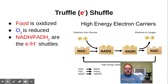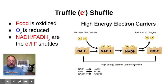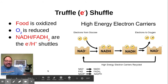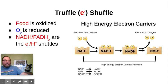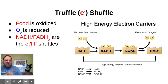Key molecules in this process include NADH and FADH2. NADH — nicotinamide adenine dinucleotide — is basically a modified adenine. Think of how you take simple molecules like nucleic acids, like an adenine nucleotide, and rearrange them in different ways to make ATP, or tack on some other molecules to make NADH.